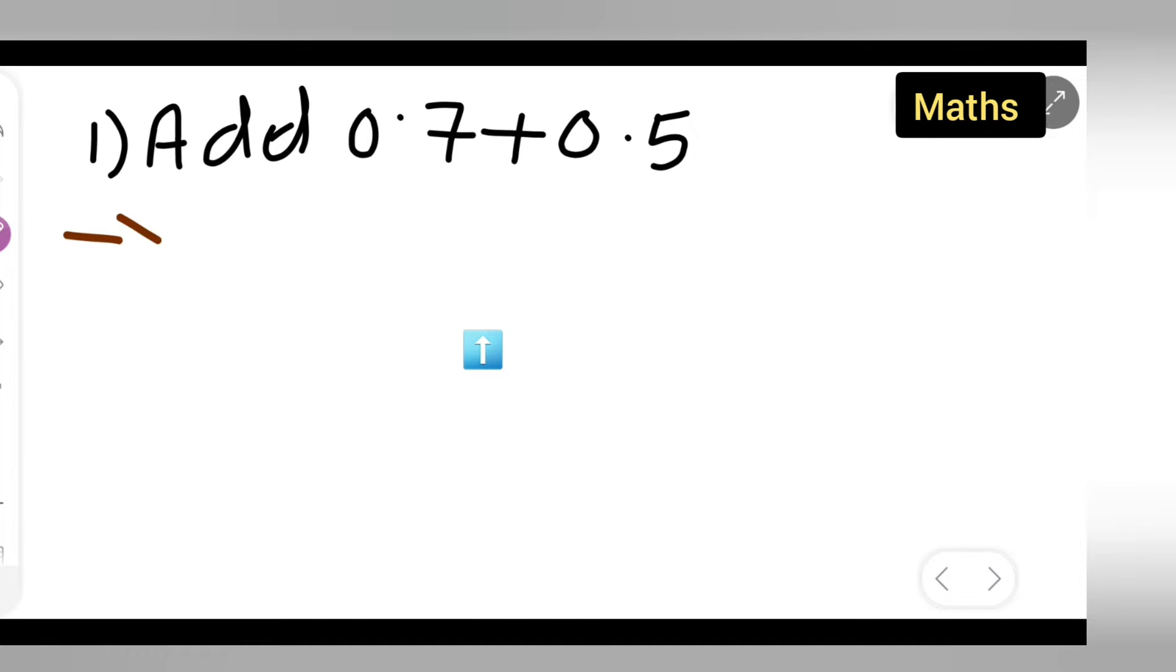First, what I'll have to do is take down the question: add 0.7 plus 0.5. First write down 0.7 right over here. Put the decimal point as it is.